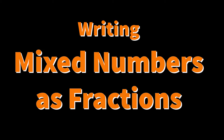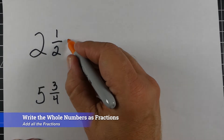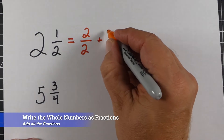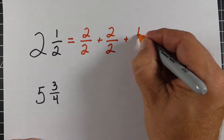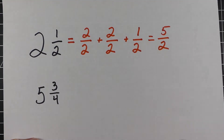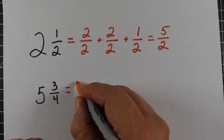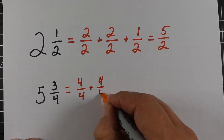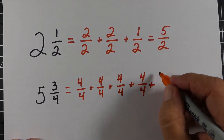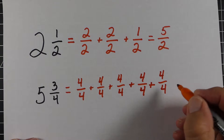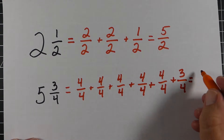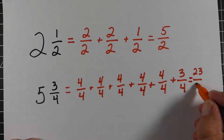Before we start multiplying mixed numbers, it's important to understand how we can write mixed numbers as improper fractions. Let's take two and one-half. We can think of this as two-over-two plus two-over-two plus one-half. Each of the two-over-twos equals one whole. We use two as our denominator because that's what our denominator is with the one-half, and you see it equals five over two. We do the same thing for five and three-fourths — five times we write four-fourths, each representing one whole, plus three-fourths, and when we add all those up, we get 23-fourths.